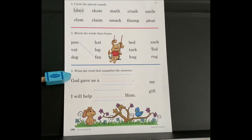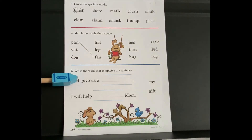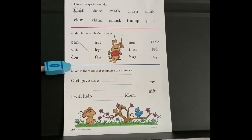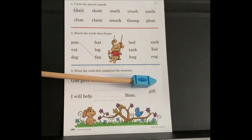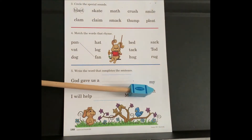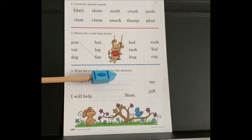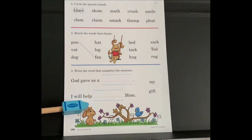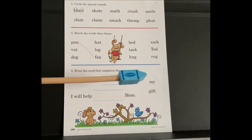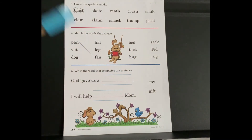Number five, write the word that completes the sentence. Read the sentence and choose one of the words provided to complete the sentence. There are two words and two sentences, so you are going to choose one word for each sentence. When you have completed your phonics sheet, you are going to your math paper.